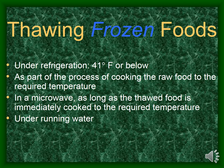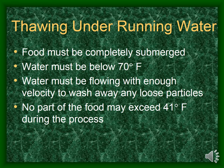The four acceptable thawing methods are: under refrigeration at 41 degrees Fahrenheit or below; as part of the process of cooking the raw food to the required temperature; in a microwave, as long as the thawed food is immediately cooked to the required temperature; or under running water. When thawing under running water, the food must be completely submerged, the water must be below 70 degrees Fahrenheit, flowing with enough velocity to wash away loose food particles, and no part of the food may exceed 41 degrees Fahrenheit during the process.